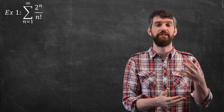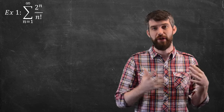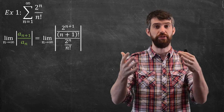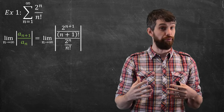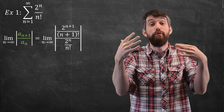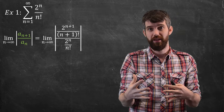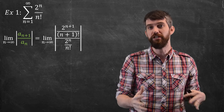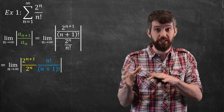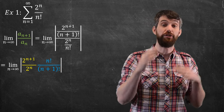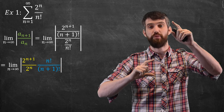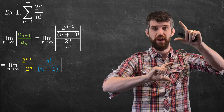Let's see how this works in an example. I've got the sum of 2^n over n factorial. To apply the ratio test, let me consider the ratio of a_{n+1} over a_n. For a_{n+1} I take that formula and plug in n+1, so it's 2^{n+1} over (n+1)!. In the denominator it's 2^n over n!. I'll collect things: put all the 2's in one spot and all the factorials in the other, so it's 2^{n+1}/2^n times n!/(n+1)!.